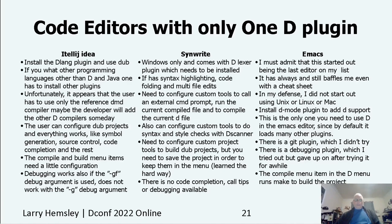The next one is SynRight, which surprised me a little. It's Windows only and comes with a D lexer plugin that you install with the plugin manager. It does multi-file project support. You need to configure custom tools to call an external command prompt, run the current file, compile files, and build projects with dub. You can also create custom tools for syntax checks and style checks. There's no source control or debugging. The last one on this list is Emacs. It's always and still baffles me, even with a cheat sheet, and has been a nemesis since I didn't grow up using it on Linux or Unix. However, the D plugin was really easy to add and it added a D menu item. The compile menu item runs make, and I didn't have much luck with the debugger plugin.